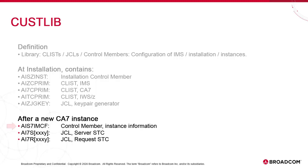The Cuslib library has been appended with items dedicated to the management of the instance: a control member called AIS7 IMCF, which has specific information about each instance; a JCL named AI7S followed by four characters describing the AI and CA7 instances, which starts the server STC; and AI7R, which starts the request STC.